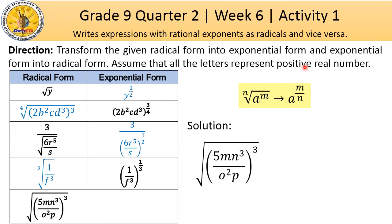Last given, copy the radicand and raise to 3 over 2. 3 from the exponent of the radicand and 2 is from the index which is square root.